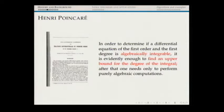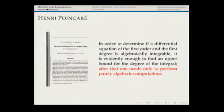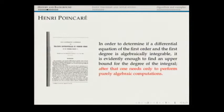Poincaré considers only the case where omega is algebraically integral — where there is a rational first integral. As for the last comment about purely algebraic computations: it's true, but if you try it by computer in an example, you'll find very quickly that you can do degrees three, four, if you're lucky five, and from then on the computer just can't do it — you'll run out of memory unless omega is very simple. So from the point of view of computational algebra, this is an open problem.